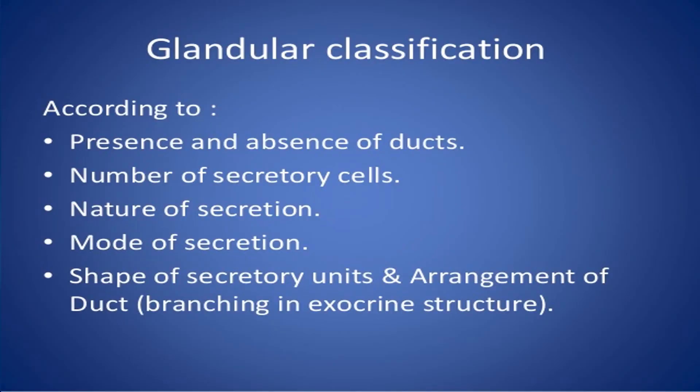For glandular classification, glands are divided into many types depending upon the presence and absence of ducts. If ducts are present, it is called exocrine. Ductless glands are endocrine glands, and the secretions released by endocrine glands are called hormones, which are directly mixed into the blood. There are no ducts to carry the secretions from these glands.